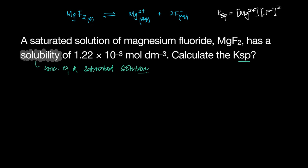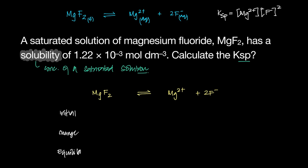To solve this, I'll use the ICE table for equilibria. The ICE table, if you remember from Kc and Kp, has magnesium fluoride dissolving to make Mg²⁺ ions. The idea is that you have a certain initial amount, then the change — which is the reacted amount — and the moles at equilibrium. You can use it for equilibrium moles or concentration, since concentration is moles per dm³.